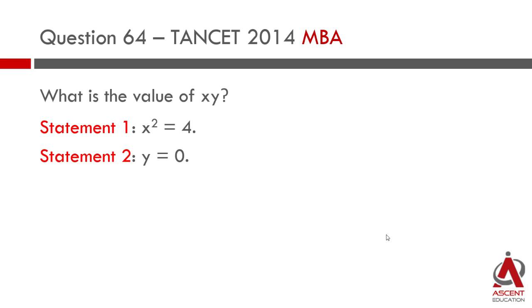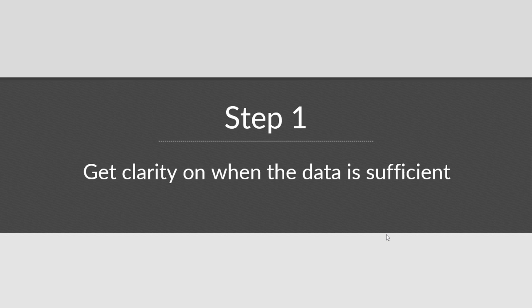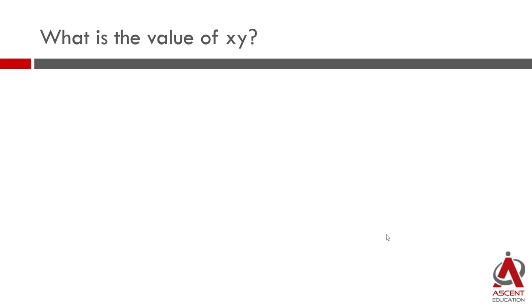We will first get clarity on when the data is sufficient. After that, we will go and evaluate the statements. In the question, what is the value of xy? xy is obviously going to be one number. So in the answer, we should be able to come up with one number as an answer. It should be something like 43.8 or minus 28.4. We should have an answer which is a number.